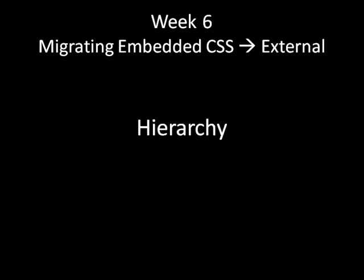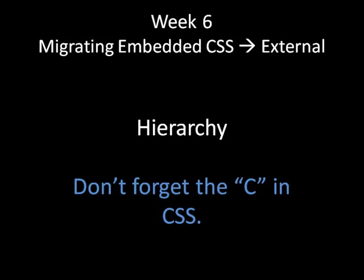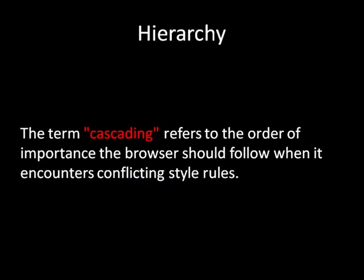So if we do have all three, now we need to understand the concept of hierarchy, because some things do trump other things and we want to make sure our site renders appropriately. The best way to remember this is to think about what the C in CSS stands for. It's called cascading style sheets for a reason — essentially all of these different styles cascade and affect one another. The term 'cascading' refers to the order of importance the browser should follow when it encounters conflicting rules.